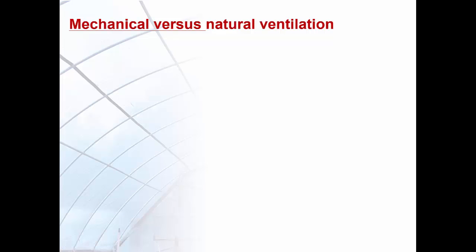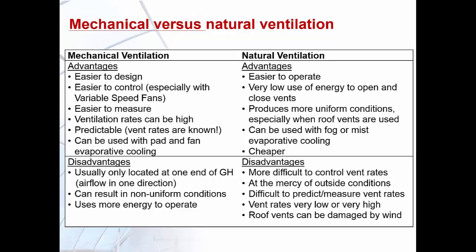There are advantages and disadvantages to both mechanical and natural ventilation systems. Advantages of mechanical ventilation include being easier to design and control, especially with variable speed fans. Ventilation rates are predictable and easier to measure. High ventilation rates can be achieved, and mechanical systems can be combined with pad and fan evaporative cooling. A disadvantage is that fans are usually located at one end, creating airflow in one direction, leading to non-uniform conditions and higher energy use.